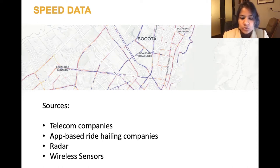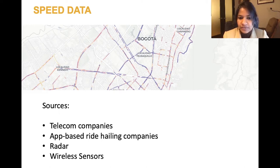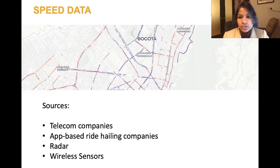In this particular map you see data on speeds from ride-hail vehicles in Bogota. This was obtained from a nonprofit group called Shared Streets. The colors signify whether the speeds are lower or higher. There are also other avenues through which one could get speed data.